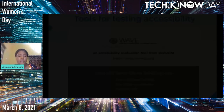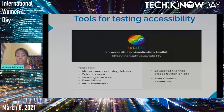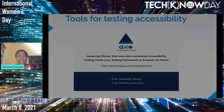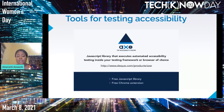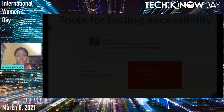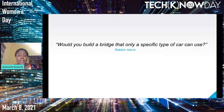For tools for testing accessibility: we have WAVE — the Web Accessibility Evaluation Tool from WebAIM. We have Total Validator and the a11y visualization toolkit. We also have Axe — the Accessibility Engine — a JavaScript library for automated accessibility testing inside your testing framework or browser. And we have Pa11y, an automated testing runner.